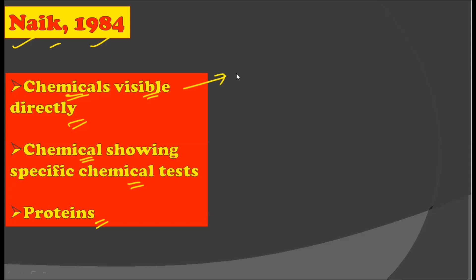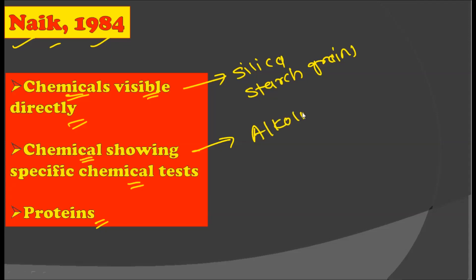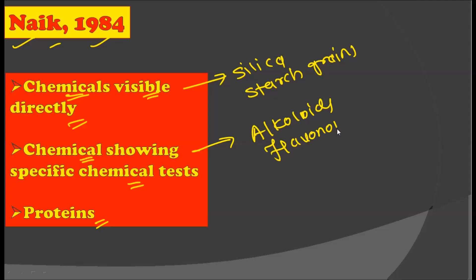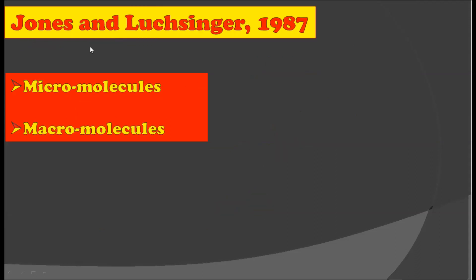In the chemicals visible directly, we have silica and starch grains. Those chemicals which show a specific taste include alkaloids, flavonoids, and many others. And then we have proteins, which are made up of 20 amino acids. Depending upon these proteins, we can also classify the plants.